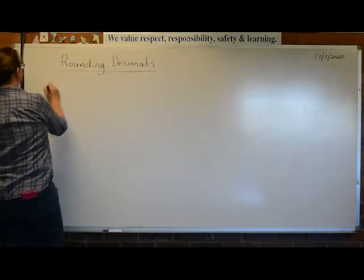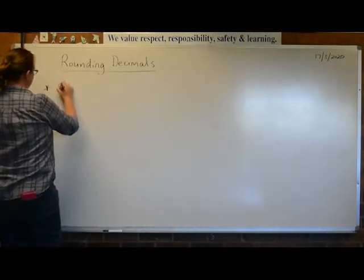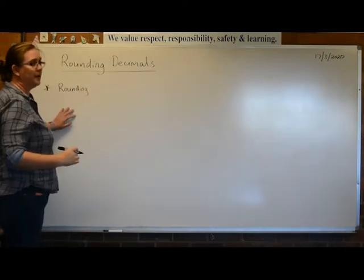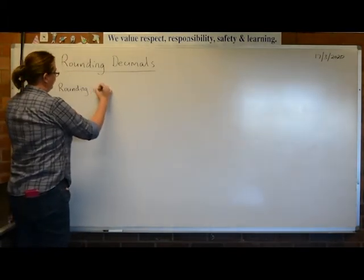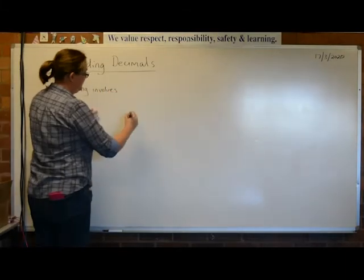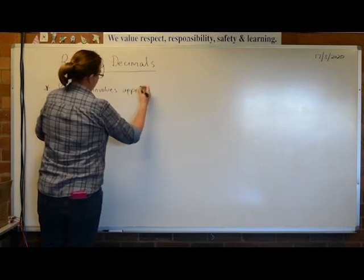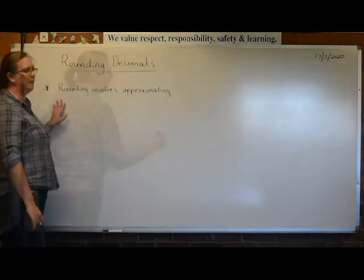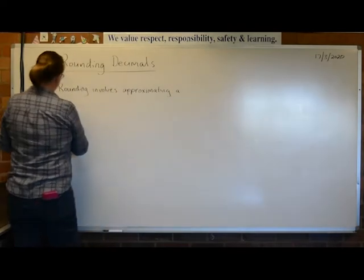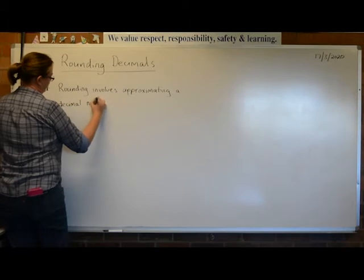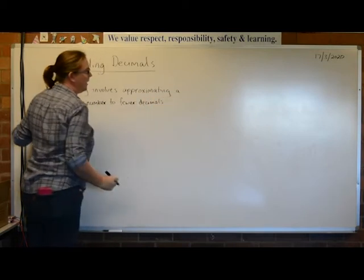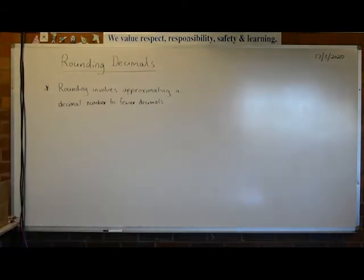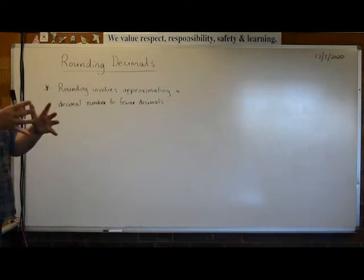One little note about rounding and what it is. When we round anything — not just decimals, any sort of rounding — it involves an approximation. Rounding involves approximating a decimal number to fewer decimals. That's all it is, and that is essentially what's happening when we're rounding anything. Whenever we round anything down or up, we are taking something and giving it fewer of those things.